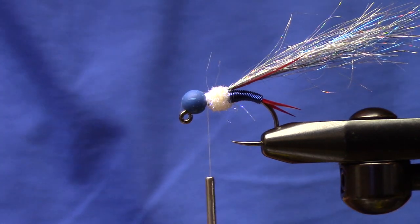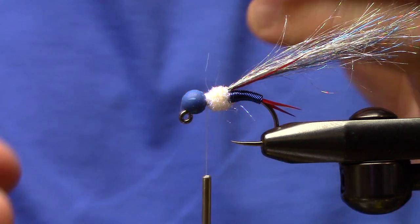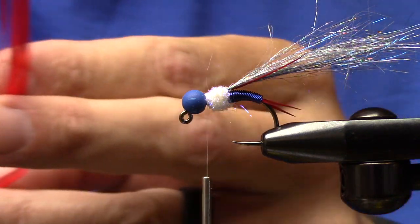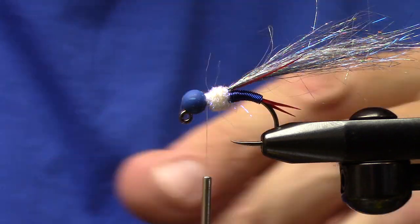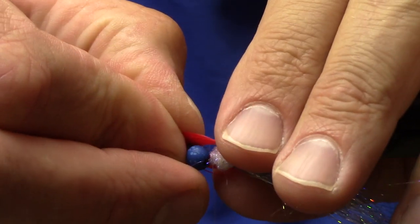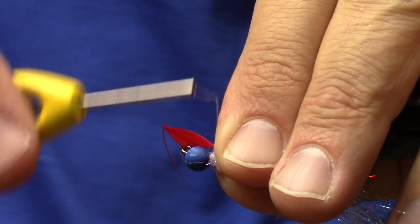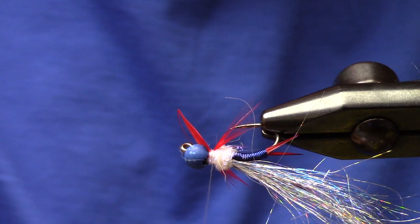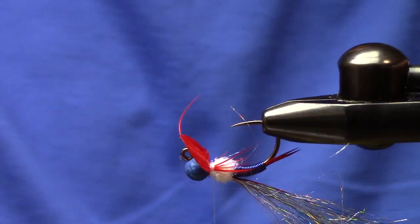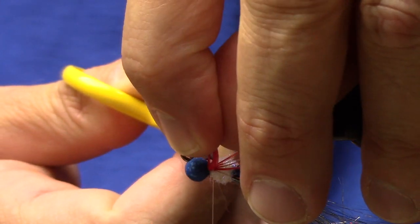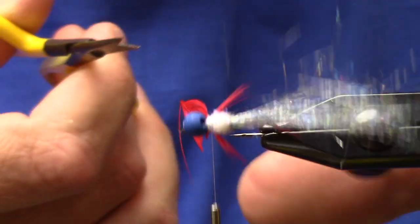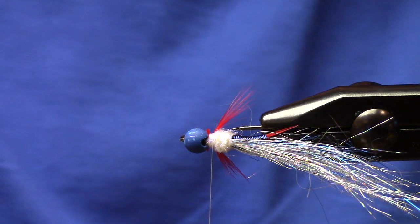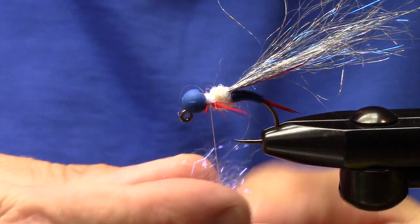The way I do my legs on copper johns is I have a saddle hackle or a schlappen feather or, you know, whatever feather is your favorite - partridge works great. What I do is I cut a V out of it and I hold that little V, and I secure it in. Then you're going to get your leg segments - they're going to match, be even, as long as your feather's even - and it kind of just makes it pretty easy. Come back in there and trim that nice and tight.